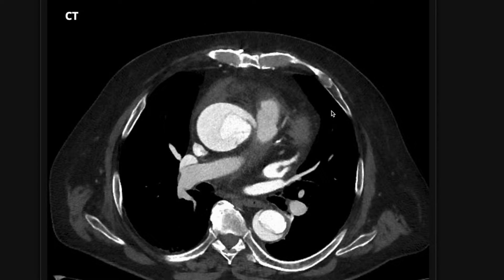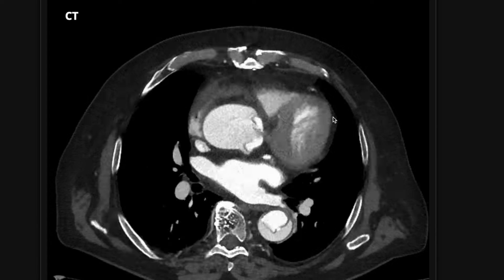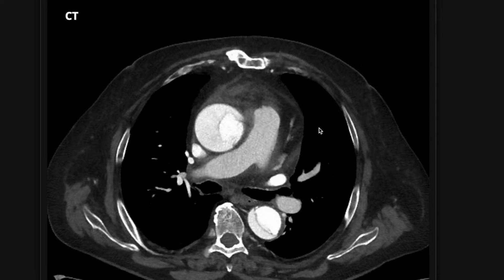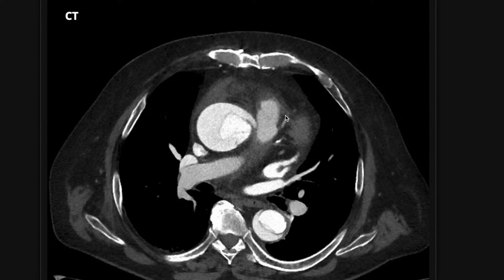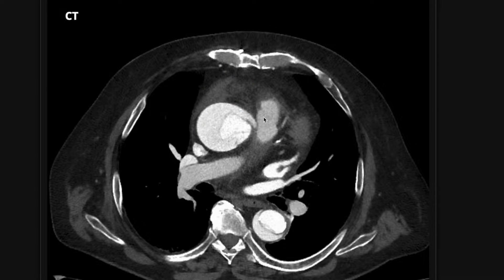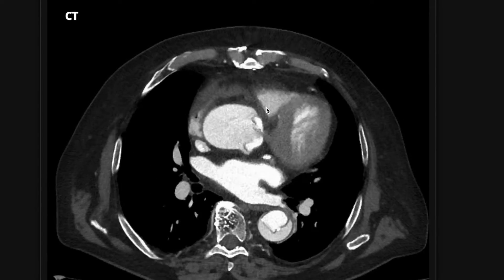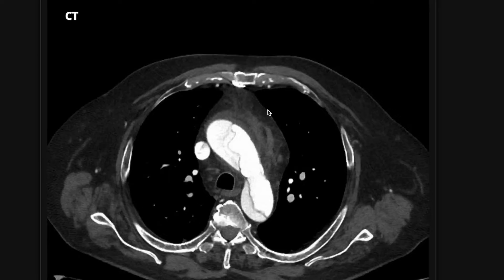Another thing to think about is whether there has been rupture into the mediastinum — is there mediastinal hemorrhage? In this case, we have a little outpouching here: a contained rupture, something called a pseudoaneurysm arising from the false lumen. It's probably leaking because we also have mediastinal hemorrhage surrounding the aorta. This pseudoaneurysm or contained rupture is probably leaking. If this gets bad enough, it can cause cardiac tamponade, which is important to let the surgeon know about.